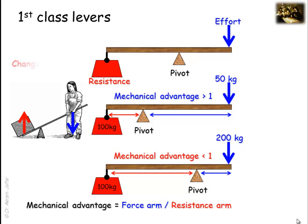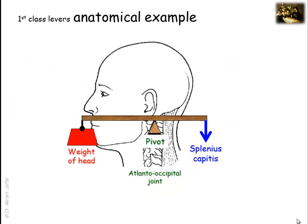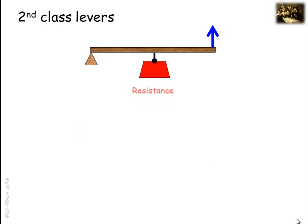The teeter-totter is a good example of this class of lever. First-class levers change the direction of the effort force. As an anatomical example, the action of the splenius muscle — the splenius muscle acting to extend the head across the atlanto-occipital joint — is a first-class lever. In fact, it is not only the splenius muscle but the muscles at the back of the neck that, when they act to balance the head across the atlanto-occipital joint, act as a first-class lever.